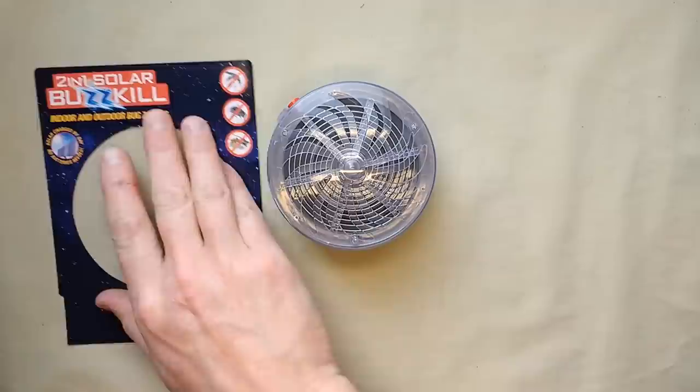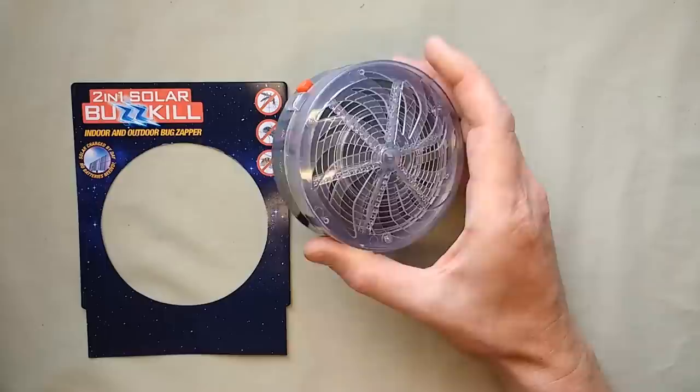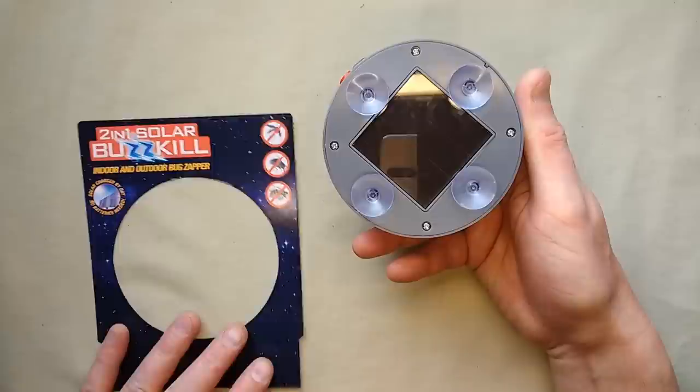This rather neat looking device is from BM home stores in the UK and it's called a two-in-one solar buzzkill. I'm not sure what the two-in-one is - I mean it's an insect zapper. I'm guessing maybe they're featuring the solar panel as a feature, one of those two-in-one features.